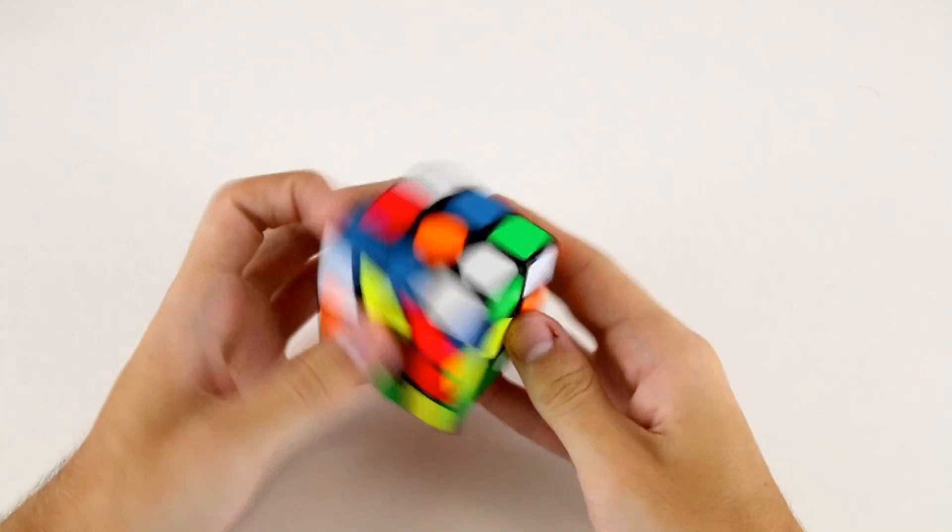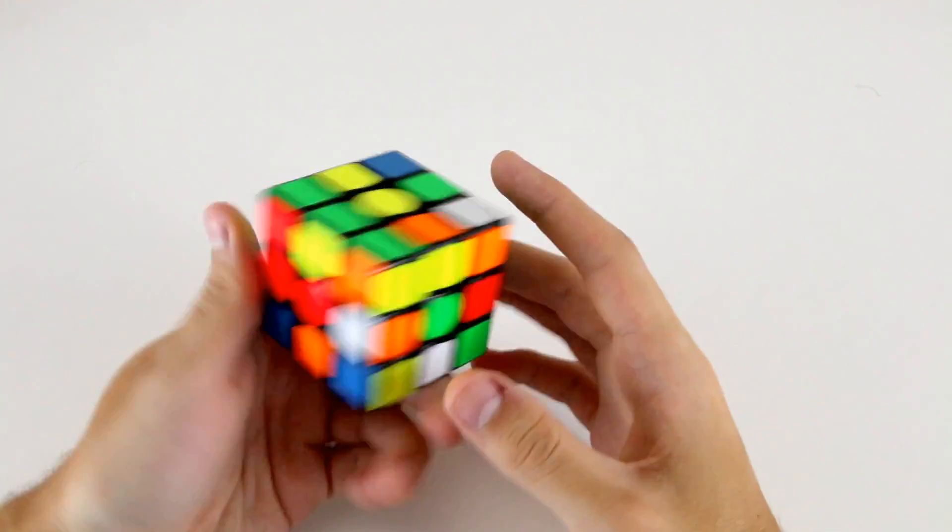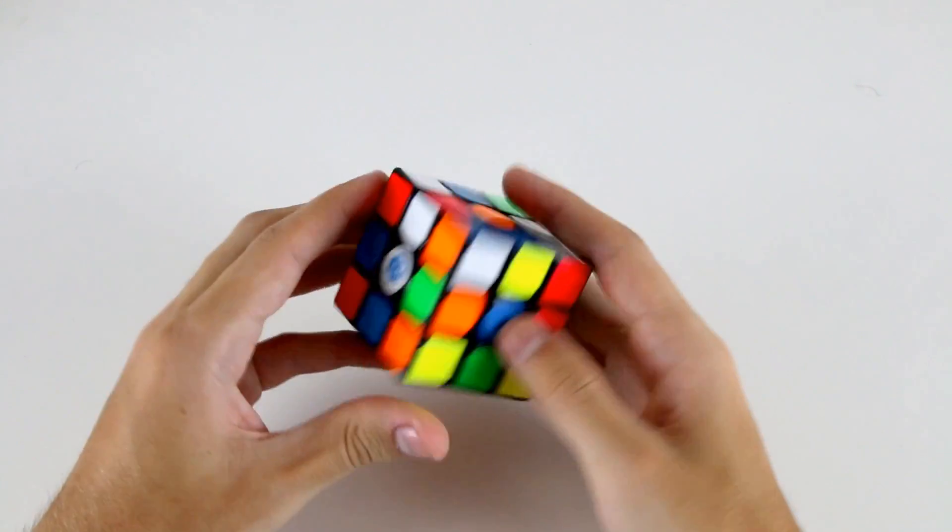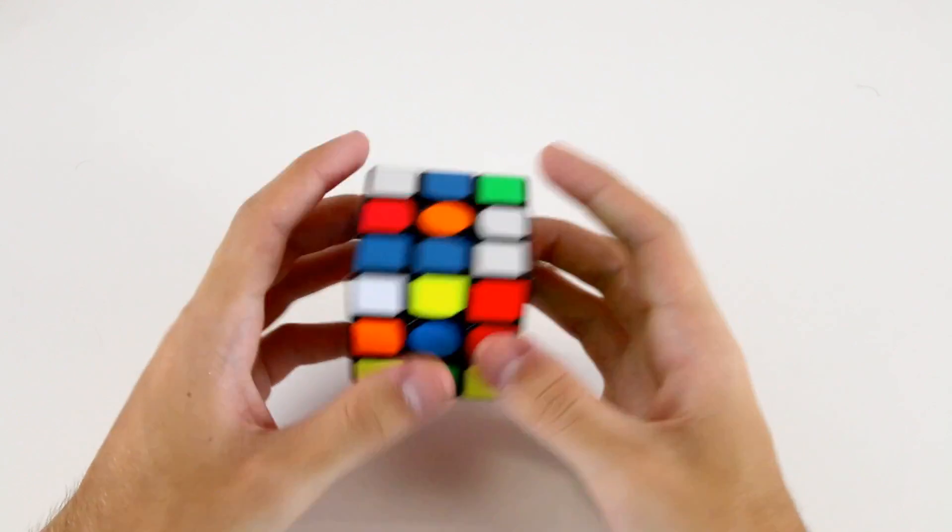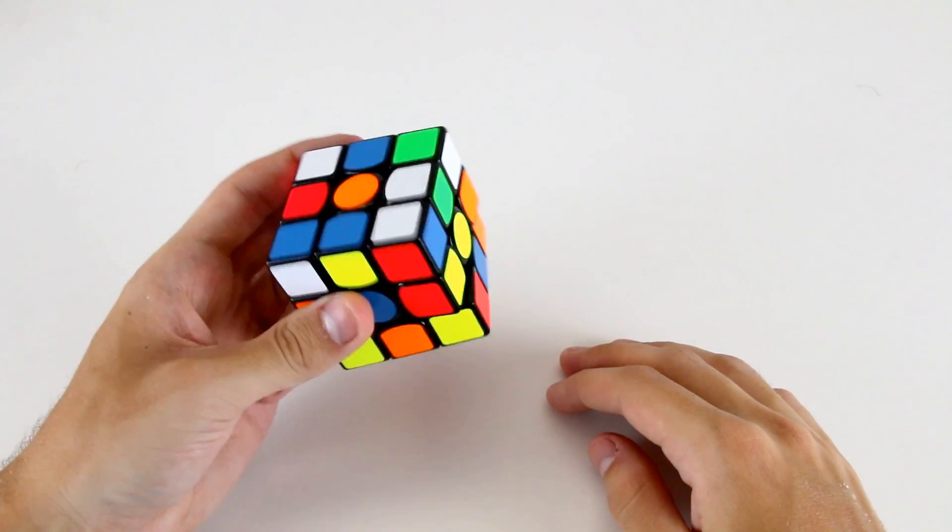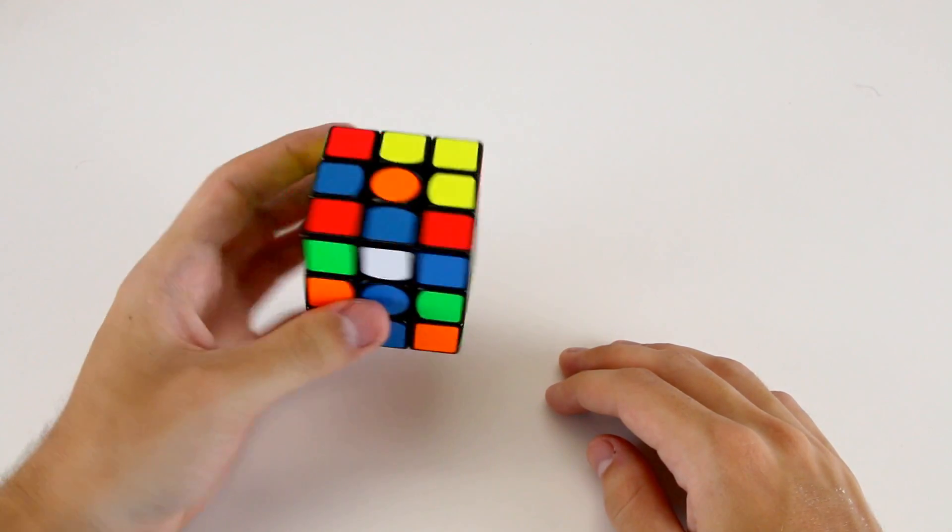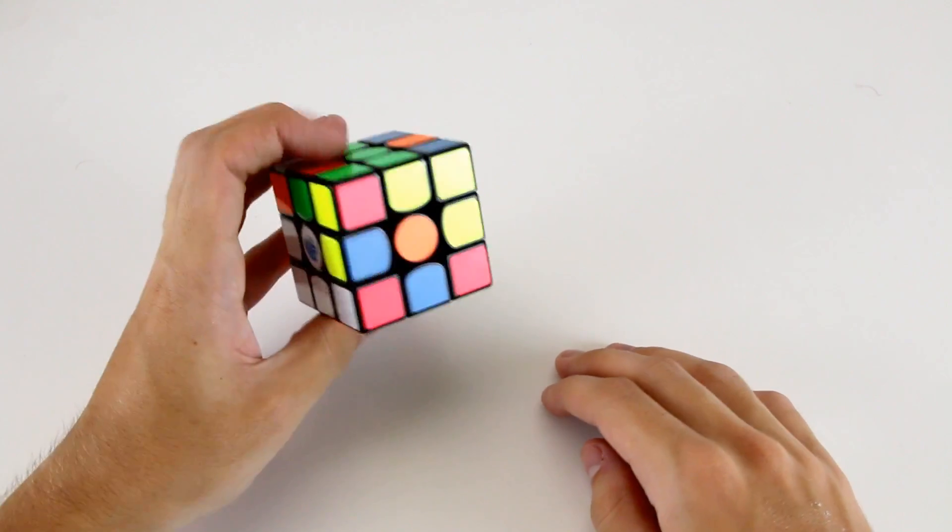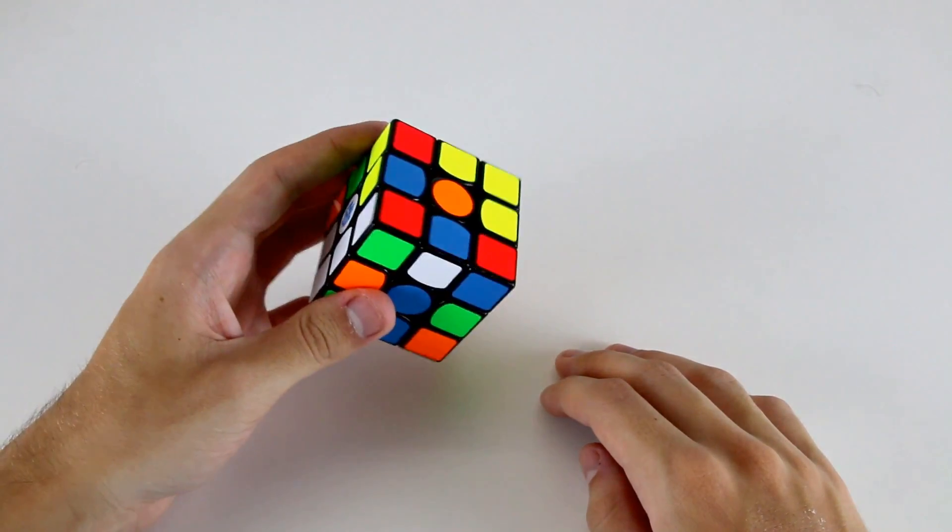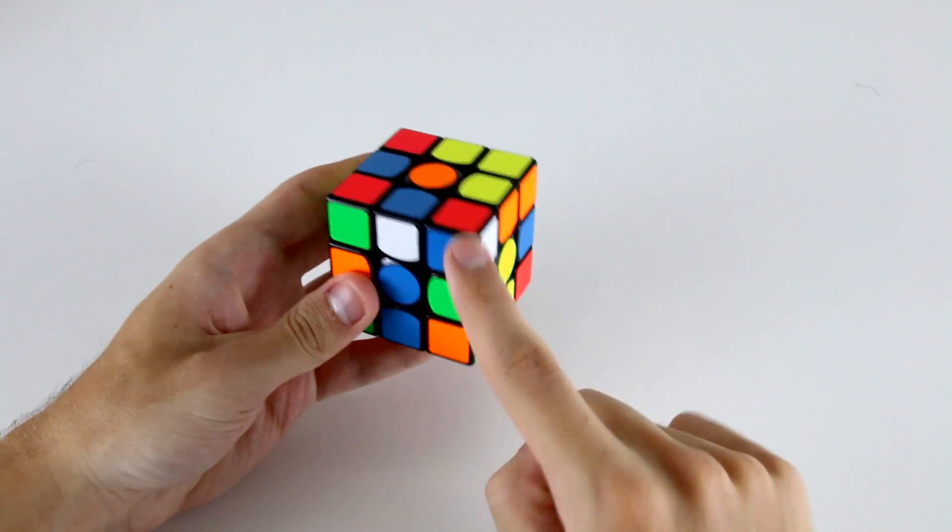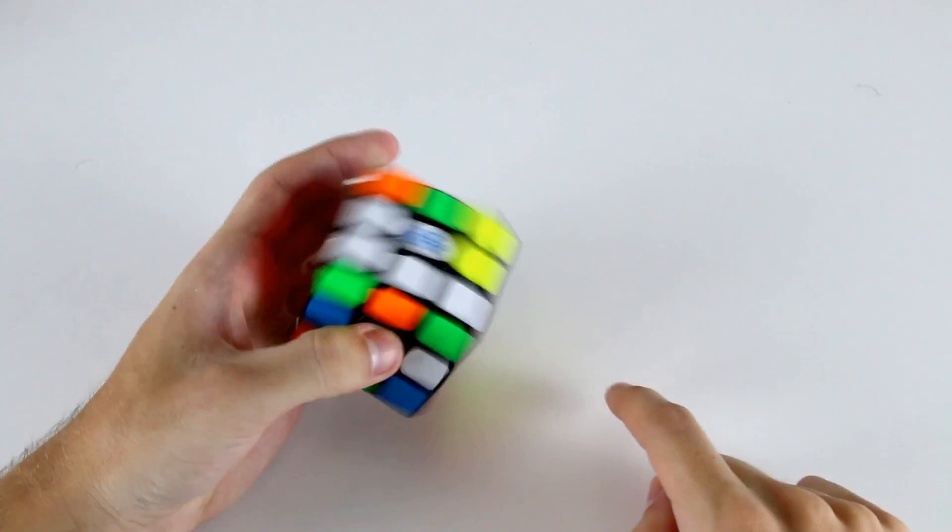Alrighty, next scramble. I think red is decent to do here. So we can do something just like d2 l2 u r prime f. Now there are a few options for our first pair. I did actually see this corner and this edge. There's also these two. I'll probably go for these two first.